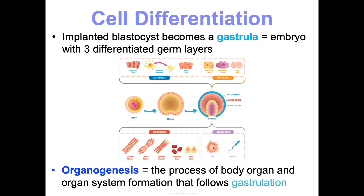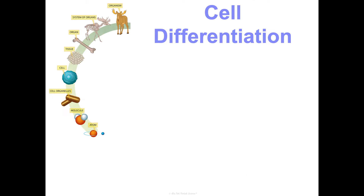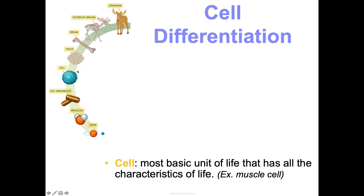We get these three layers, and then those layers start differentiating more and we start forming organs. The cell is the most basic unit of life with all the characteristics of life. In unit one biology basics, we learned about the four macromolecules — carbs, lipids, proteins, and nucleic acids — as well as some of the atoms that make up those molecules. But none of those things are alive.